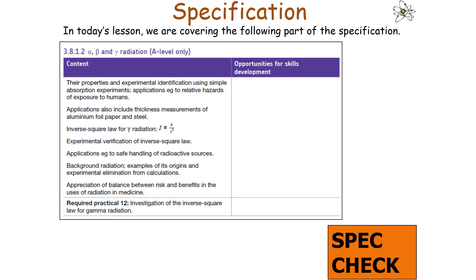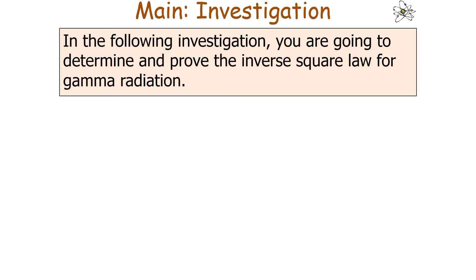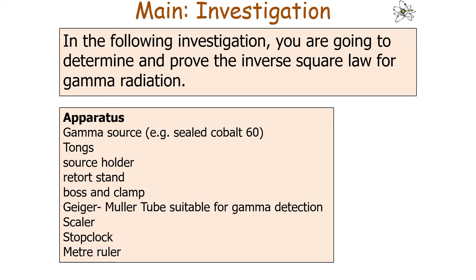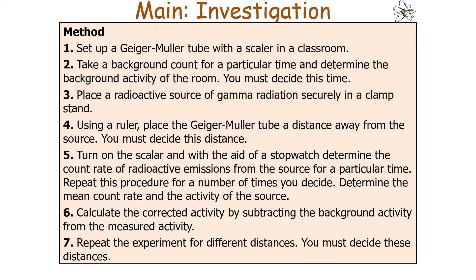This links to AQA A-level physics specification section 3.8.1.2: alpha, beta and gamma radiation. The apparatus you would need includes a gamma source such as cobalt-60, tongs, a source holder, a clamp stand, a boss, a clamp, a Geiger-Müller tube suitable for gamma detection, a scalar, a stop clock and a meter ruler.